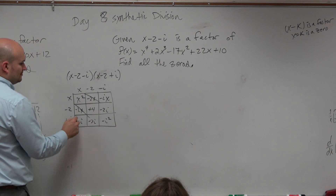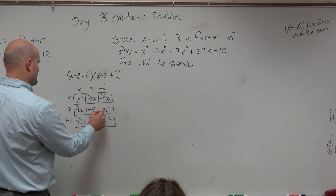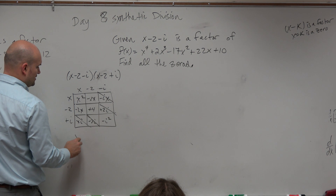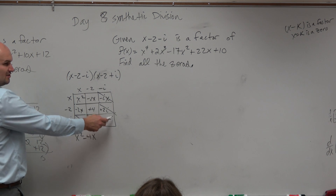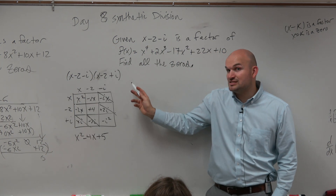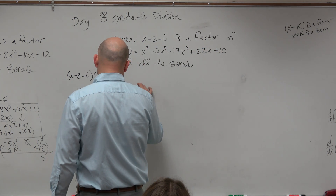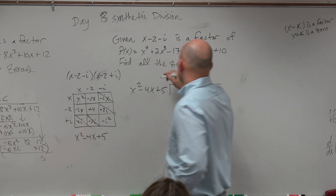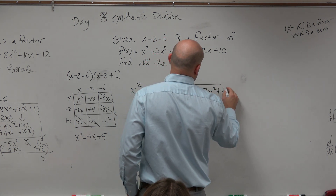So we know those add to zero, those add to zero. Negative negative one is positive one. Positive one plus four is five. So if this is a factor and this is a factor, that means their product is also a factor. So that means I can now do long division with that. And we'll do long division of x to the fourth plus 2x cubed minus 17x squared plus 22x plus 10.